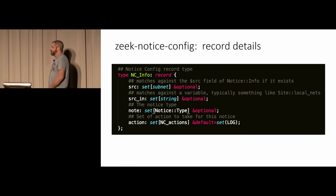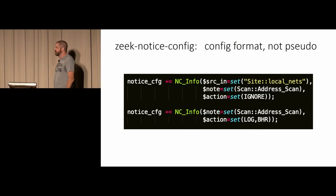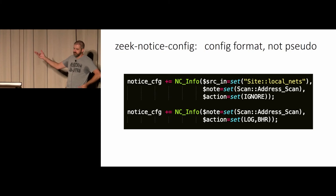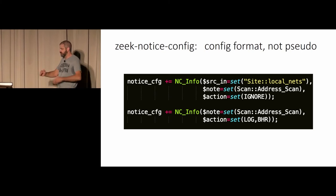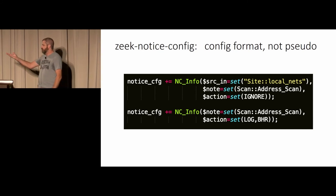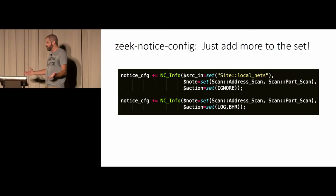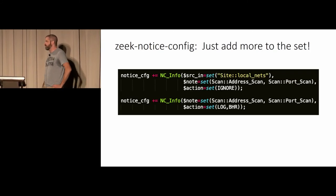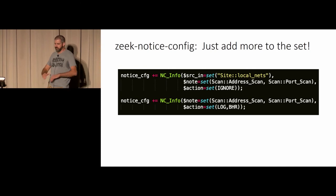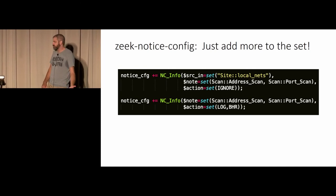Same thing for the actions and notes, and the sources you want to match to. That's what the code looks like for configuring a line — here the whitelist is local nets, which is actually a string. It'll match on the contents of that, so you don't have to define your local nets in the config framework. And the bottom one obviously has no match for the whitelist, so it'll just go ahead and black hole route that. You can just add port scan to that instead of address scan, so now you can have a list of 20 different things in one config line, and they all have that same action take place.